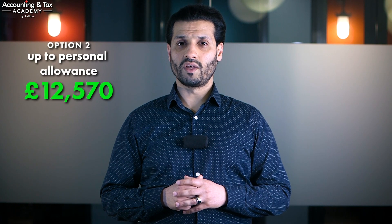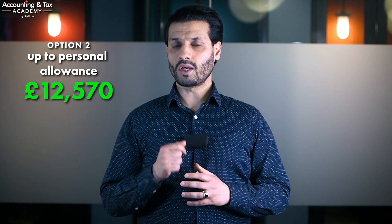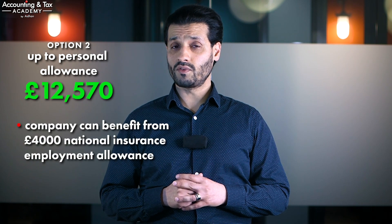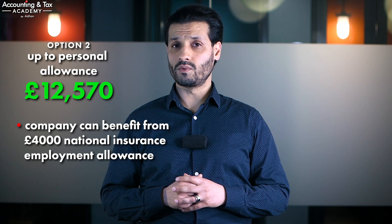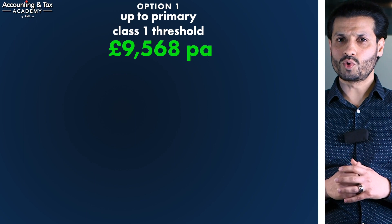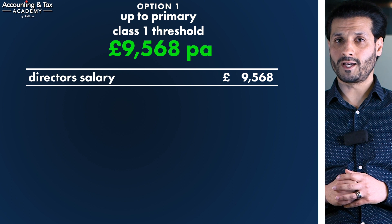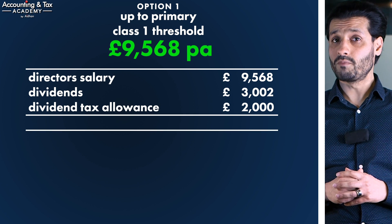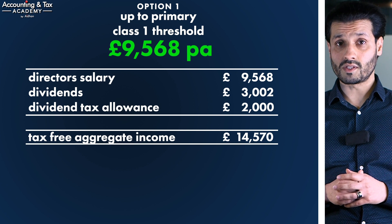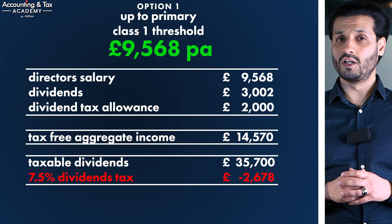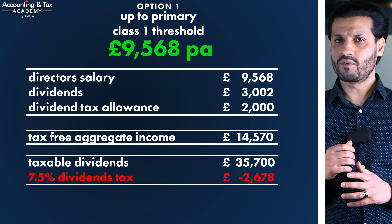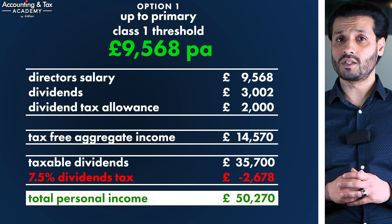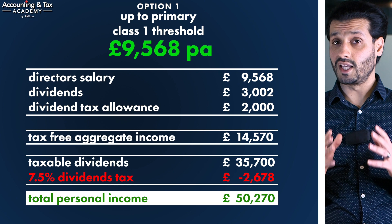If you are a limited company business with more than one director or a single director with a paid employee on PAYE, as a director you will want to consider option two — a salary up to the £12,570 personal allowance threshold — because your company will more than likely qualify for the national insurance employment allowance of £4,000 and therefore pay no class one secondary national insurance up to this allowance. Under option one, taking the £9,568 salary, the additional £3,002 tax-free dividend, and another £2,000 tax-free dividend allowance, your total aggregate tax-free personal income is £14,570.